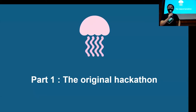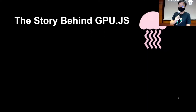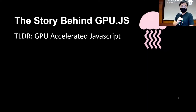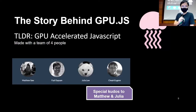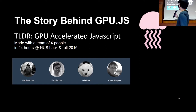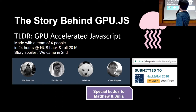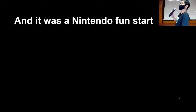Part one: the original hackathon story. The story behind GPU.js was that we wanted to make GPU programming accessible via JavaScript as a joke. The four of us came together and made it in 2016. The story spoiler is that we came in second. And it was just a very weird journey since then.